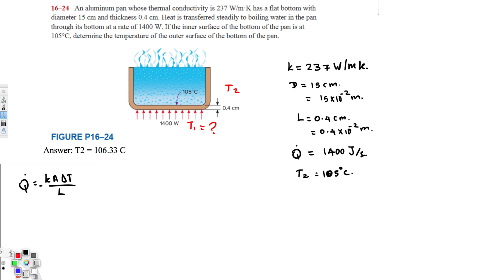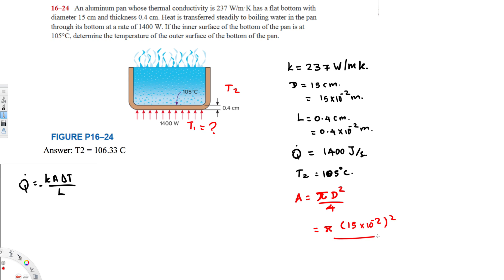Let's find the area to plug into the equation. The area of a circle is A = π·d²/4. So A = π × (15 × 10⁻²)² / 4. Calculating this gives A = 0.0177 square meters. This is the cross-sectional area of the pan bottom.